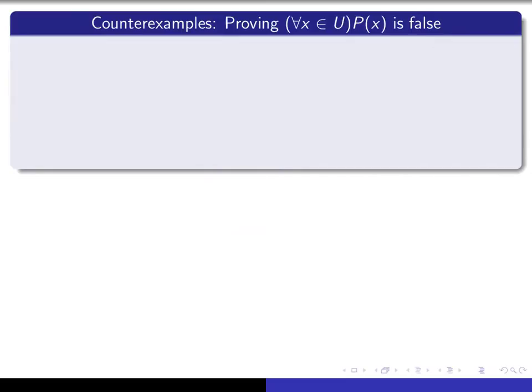This brings us to the idea of a counterexample. Suppose you're interested in a statement of the form for all x in U, P(x). In other words, it's saying no matter which x in U you choose, P(x) happens. Suppose you suspect that result is false. How can you prove that it's false? Well, you can use a constructive proof that the negation of that is true. So the negation is there exists an x in U such that the negation of P(x) happens. You just have to produce a single x for which P(x) is false.